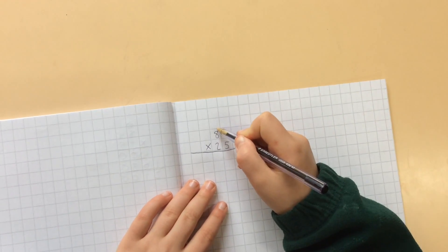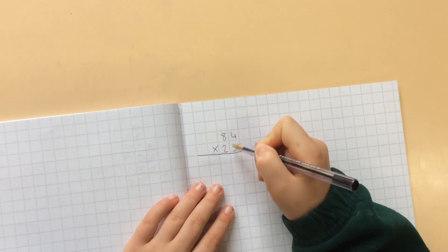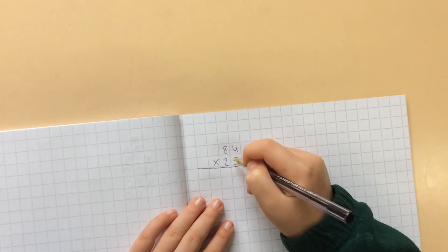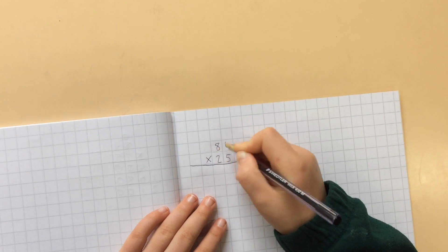We're going to do a multiplication method like 84 times 25. So first I'm going to start with just making everything 5 times bigger.